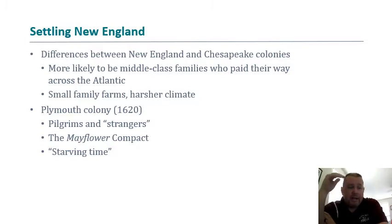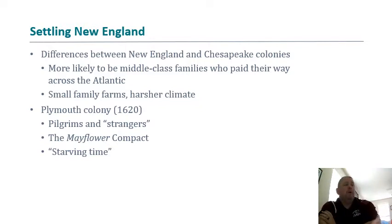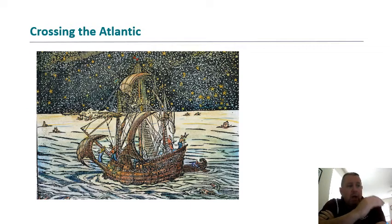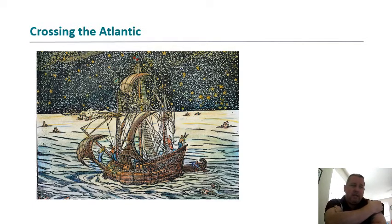Ultimately, when you get into the 18th century, the New England area becomes the mercantile area — the entrepreneurial, middle-class part of the colonies. But early on, with the Plymouth Colony and the Mayflower Compact, it is religious freedom that these people are seeking — though not necessarily tolerance. Crossing the Atlantic was not an easy task by any stretch of the imagination.